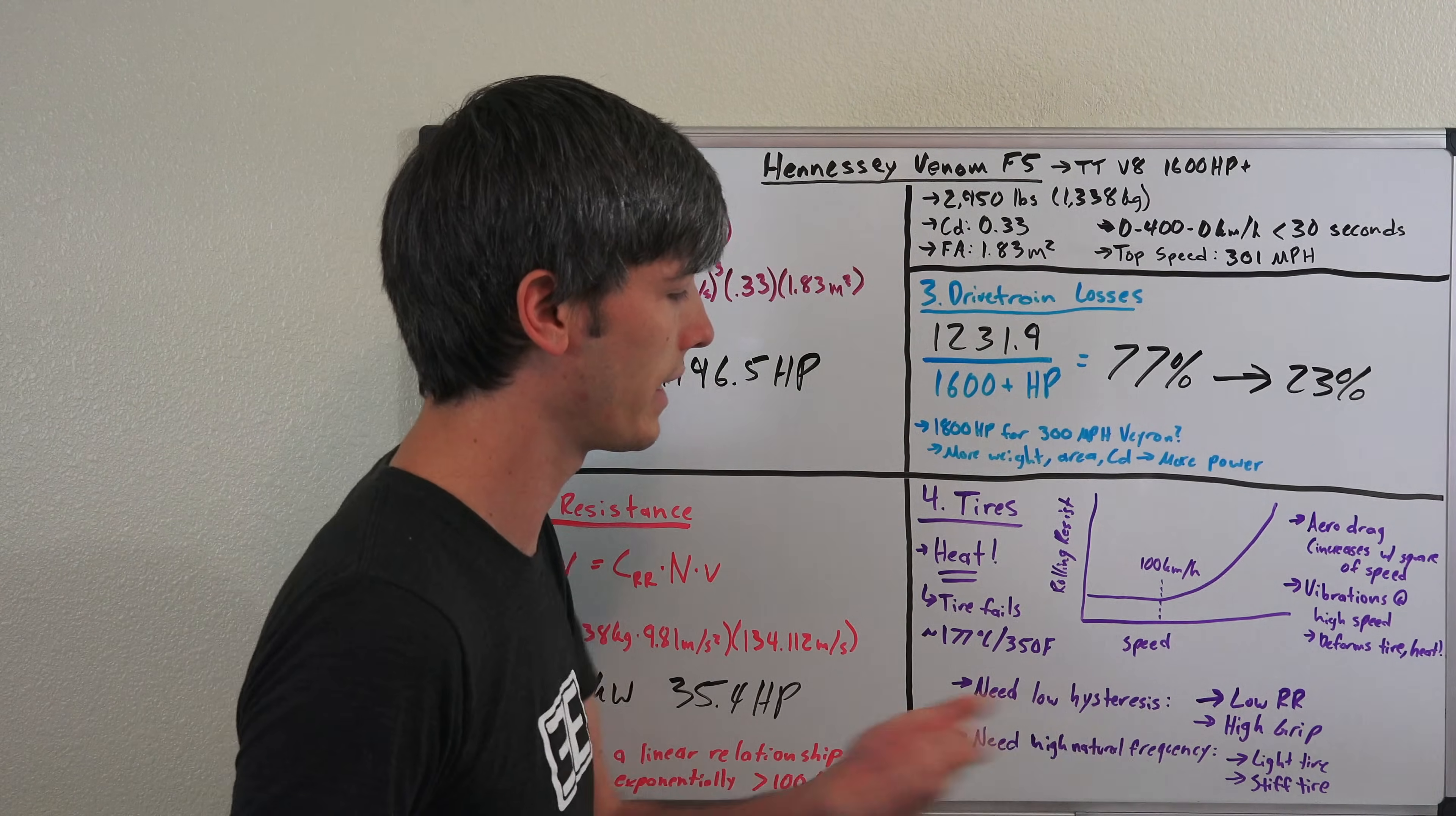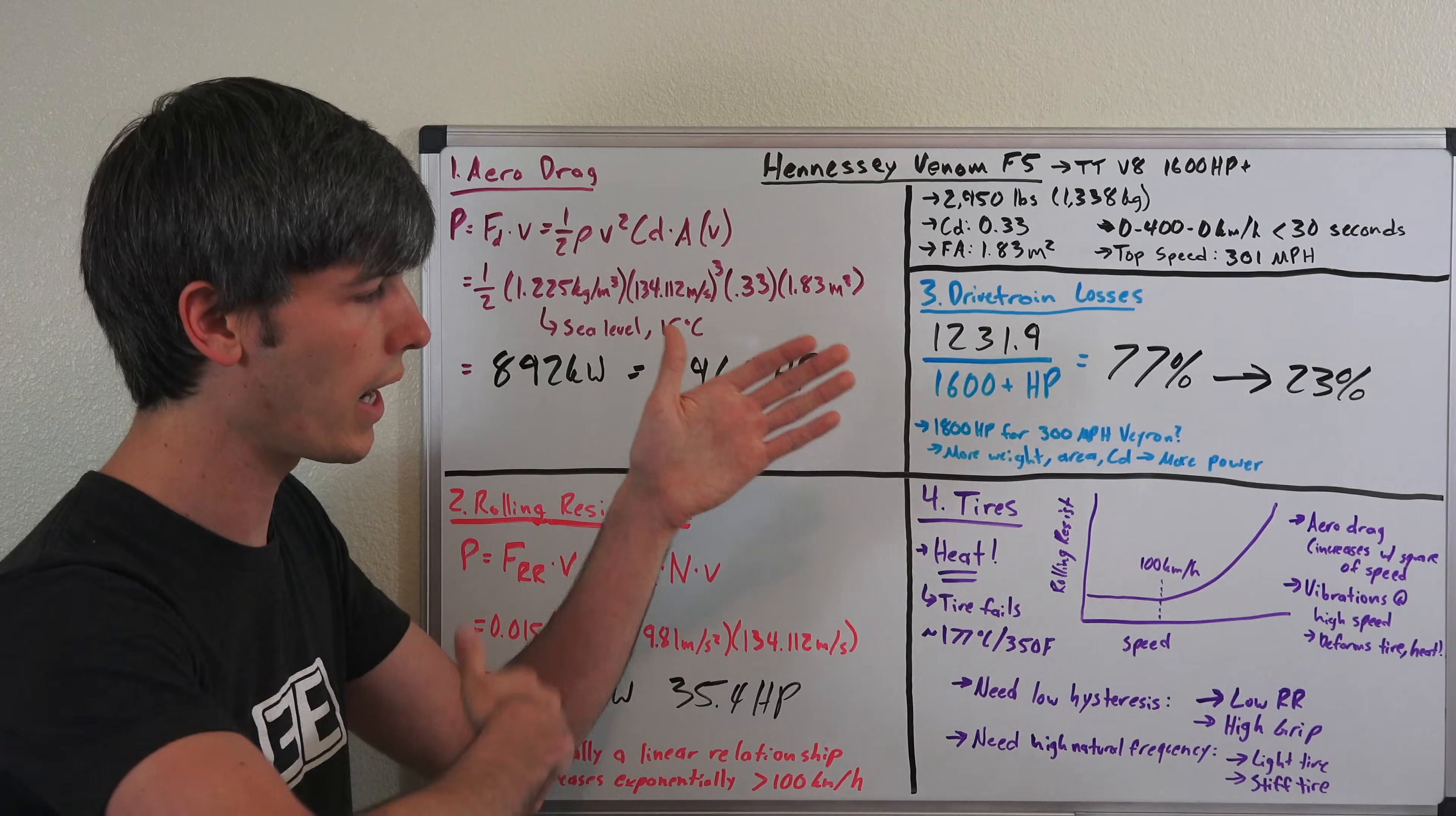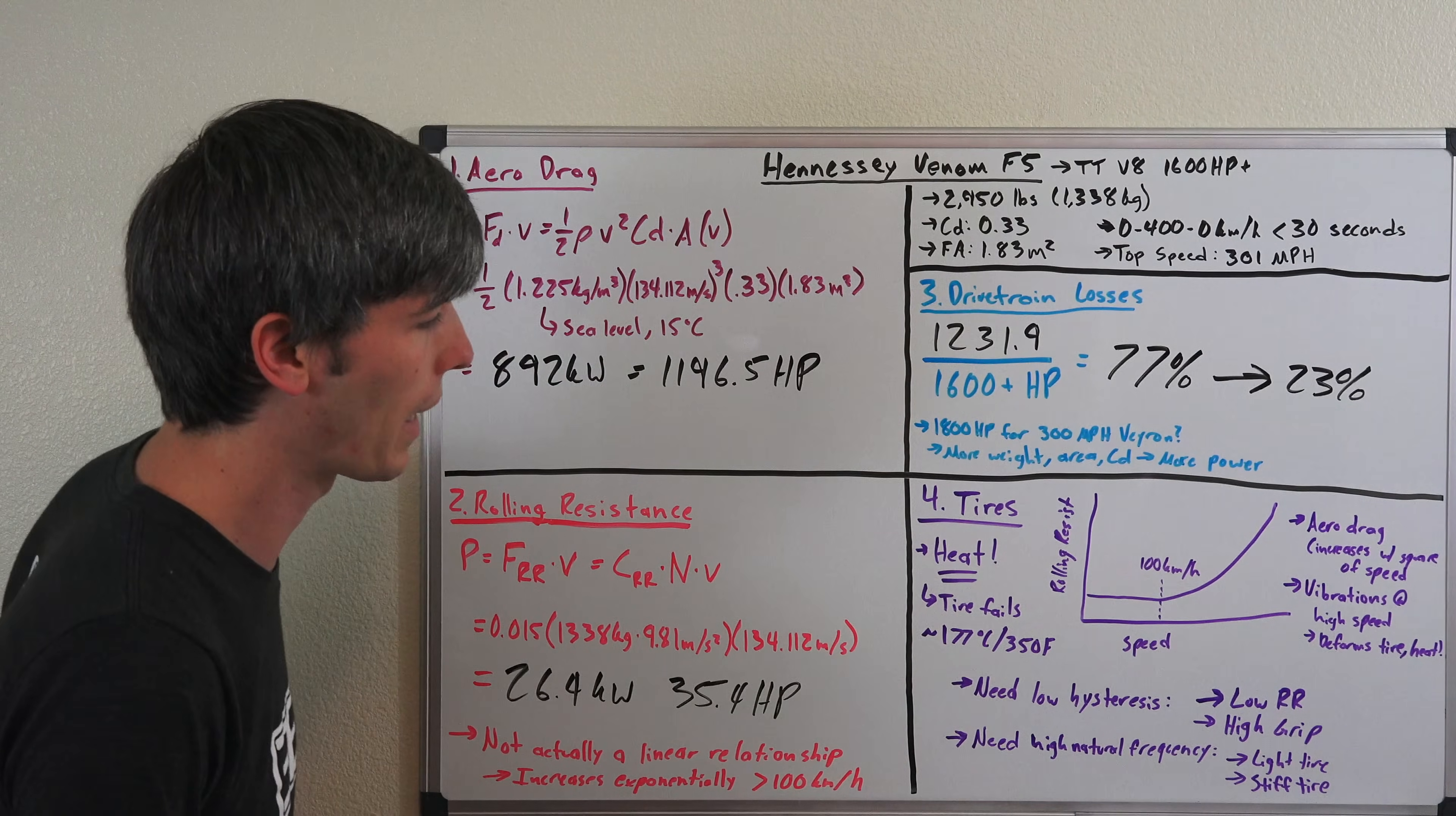You also want a high natural frequency of that tire. You don't want the vehicle speed to reach the natural frequency of that tire or it's going to start forming waves within the tire, and then the tire is going to start to fail from all the heat that those waves are creating. So you want a light tire and you also want a stiff tire, and these two once again battle against each other.